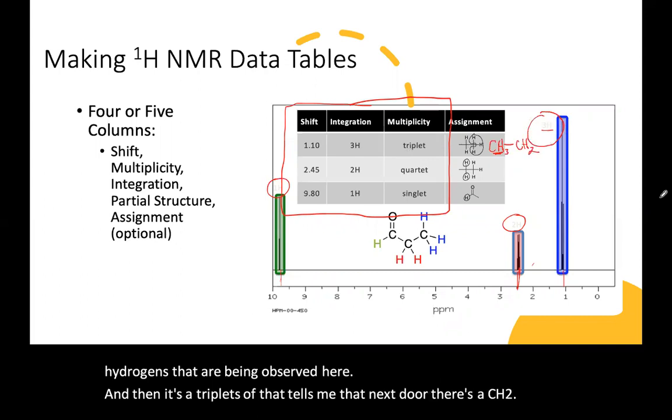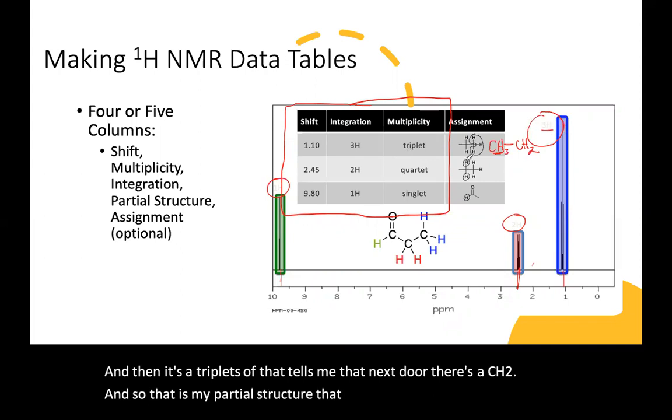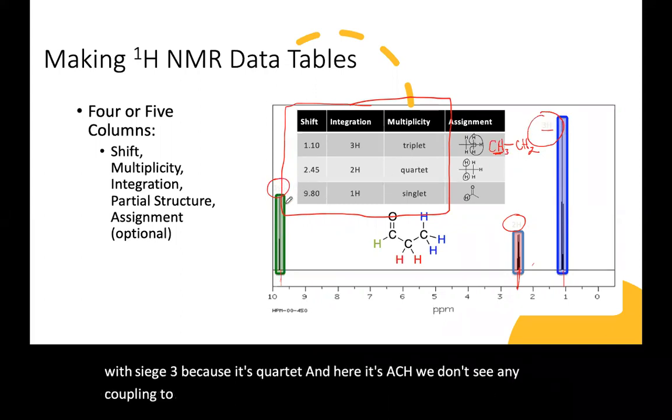And then it's a triplet. So that tells me that next door there's a CH2. And so that is my partial structure that will go there. Here it's a CH2 next to a CH3 because it's quartet. And here it's a CH. We don't see any coupling to it. It's common for aldehydes. And the chemical shift at 9.8 tells us it's the aldehyde. And again, I like those underlined.